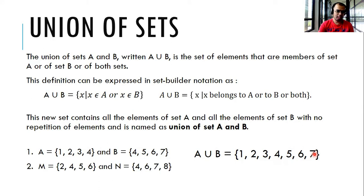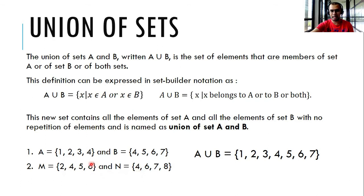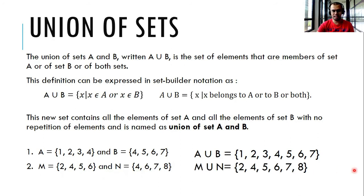Example number two: M is the set {2, 4, 5, 6} and N is the set {4, 6, 7, 8}. Notice that we have 4 and 6 in set N and we also have 4 and 6 in set M. We are not allowed to have repetitions, so we will only take one of these repeated elements. The union of M and N is equal to the set {2, 4, 5, 6, 7, 8}.